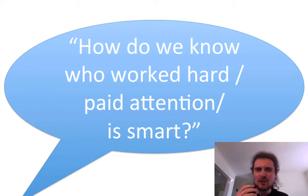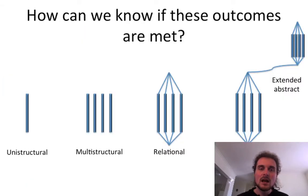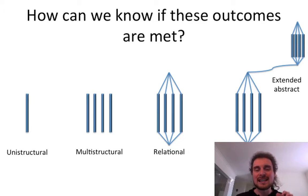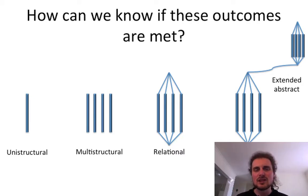If your assessment focuses on hard work, paying attention, or being smart, you might want to rethink that — or change your learning outcomes to say 'at the end of this unit you'll know how to work hard, pay attention, and be smart.' So how do we know if different sorts of learning outcomes are met? We go to the SOLO taxonomy diagram. We're going to do different sorts of certifying assessment for unistructural versus extended abstract outcomes, or multistructural versus relational. A problem-solving assessment is going to be different to a creative assessment; they assess different sorts of learning outcomes.